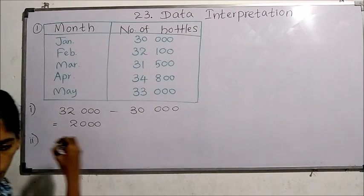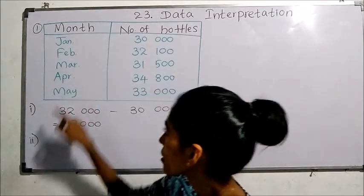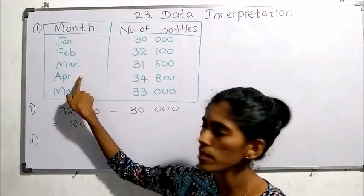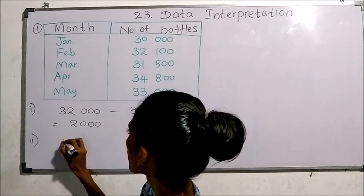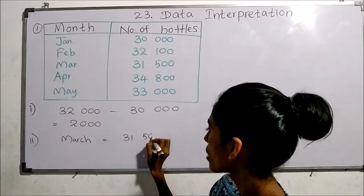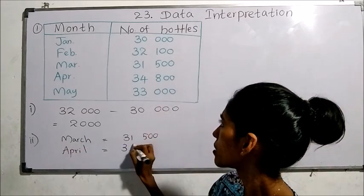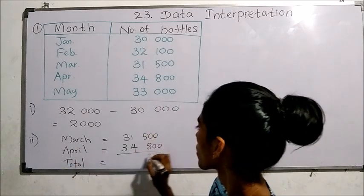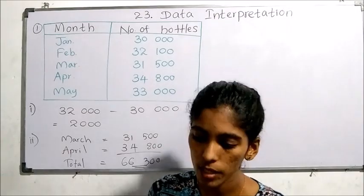In question 2, considering the months of March and April, what was the total sales during these two months? Total sales means we add these two. In the month of March 31,500 bottles, and in the month of April 34,800 bottles were sold. So the total number of bottles: 66,300 bottles were sold in total.